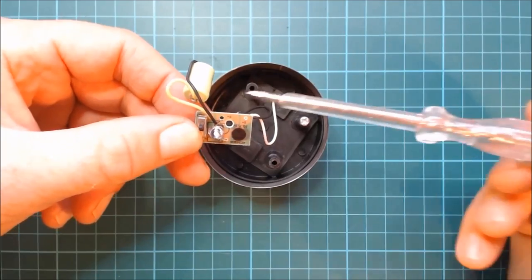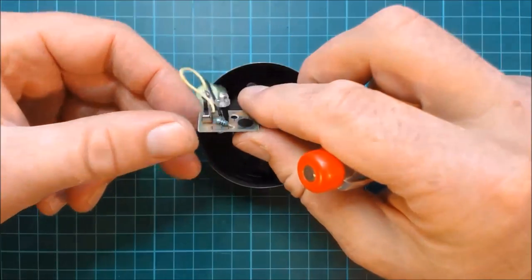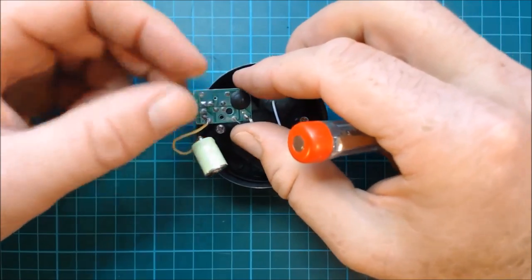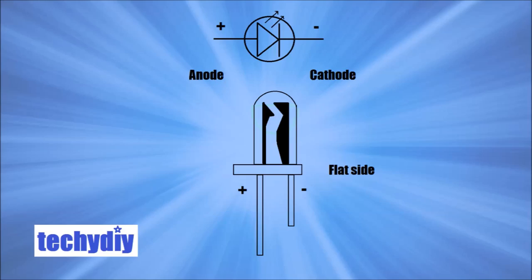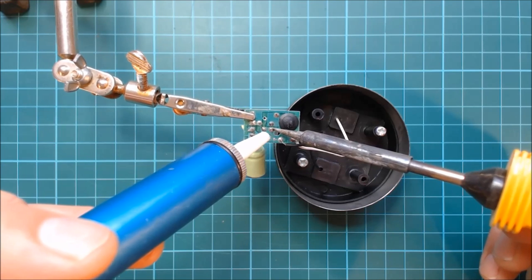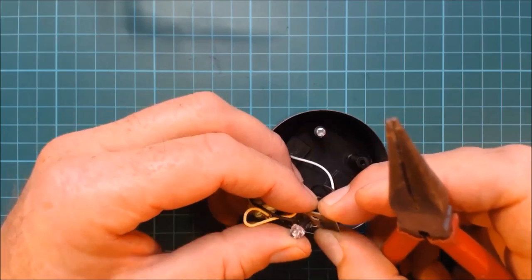The next job is to unsolder the cathode side of the LED. Now you can find that by looking for a flat edge on the rim of the LED. Now I'm using a solder sucker to remove the solder. And then remove the lead from the hole.